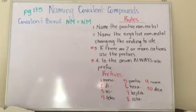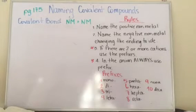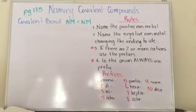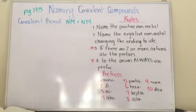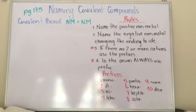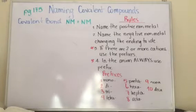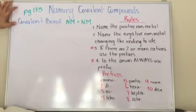Hi guys, how are you? Today we're going to continue with naming covalent compounds. This is also in chapter 6 and it's on page 171. So if you have your books, please open it on page 175. There we have how we're going to name covalent compounds.